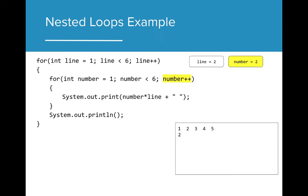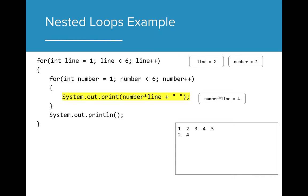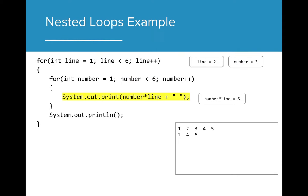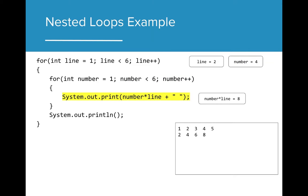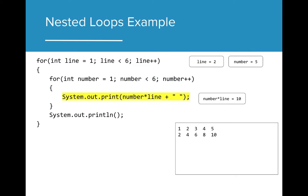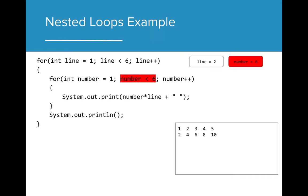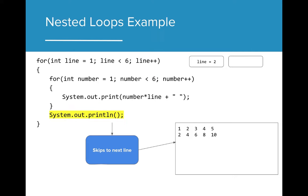Now that the loop is over, number is increased by 1. The boolean expression is still true, so the loop executes again. Now number times line is 4 and is printed to the console. Number is incremented again, passes the boolean expression, and prints the result of number times line to the console. Number increments again, passes the boolean expression, and prints the product of number times line to the console. Number increments, passes the boolean expression, and prints the product of number and line. Number is incremented one last time, but does not pass the boolean expression. The for loop stops executing, and the next line of code is executed following the loop. The print line statement begins a new line for the next iteration of the for loop.